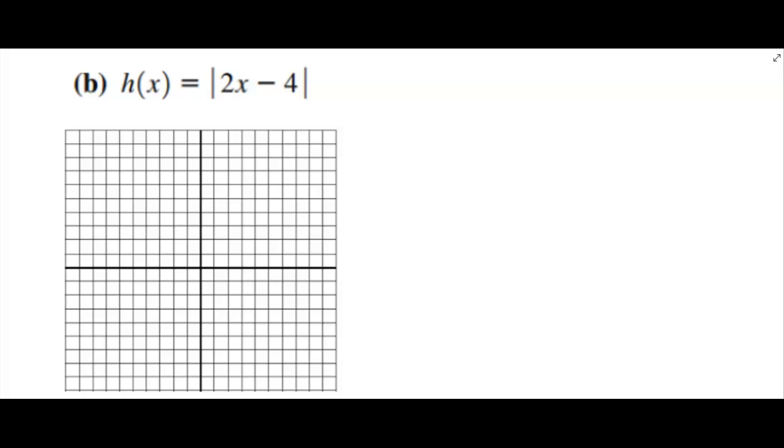All right, so this is another example that they want us to graph. It's another absolute value, so we're expecting a v-shape.